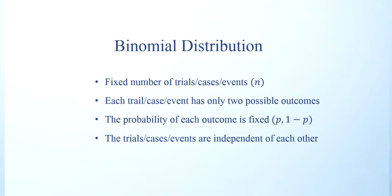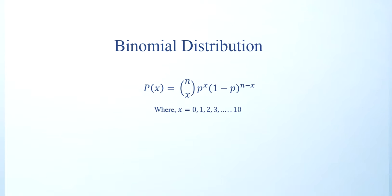When you're tossing a coin, for example, your first toss and the second toss has nothing to do with each other. They are not dependent on each other. When those four conditions satisfy in any situation, you can construct a binomial distribution by using this formula.